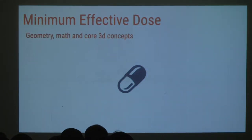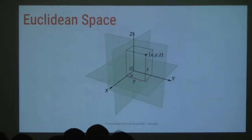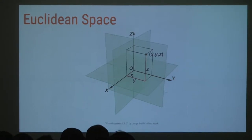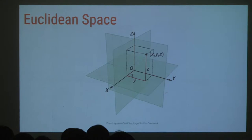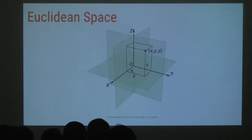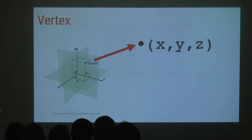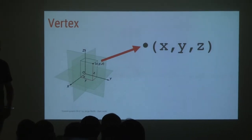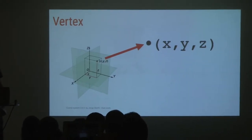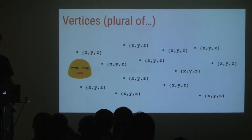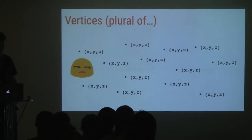Now the minimum effective dose of geometry, math, and core 3D concepts. It's important that you grasp the basics to understand half of what I'm going to be saying. In 3D space, you use three variables — X, Y, and Z — to position points in your space. A vertex is a point in space using these coordinates.